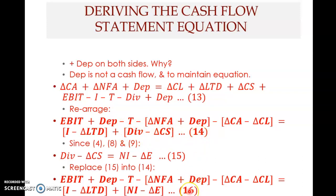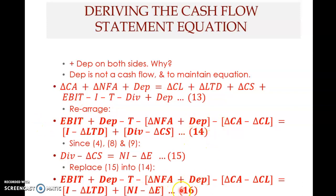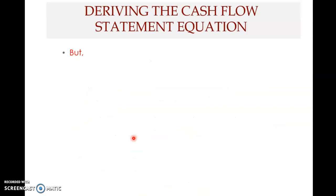Why do we need these two equations? Because in some questions they don't give you a breakdown of total equity — they don't give you common stock; some questions give you only total equity or the change in total equity. Therefore in such cases you need equation 16. But in some cases problems give you the breakdown of equity — the common stock, the retained earnings, and so on. In those problems you can use the other formula. If you are lost in deriving these equations, don't worry — all you have to remember is these two equations.